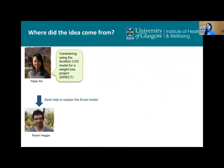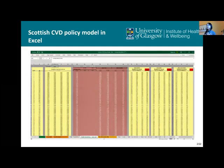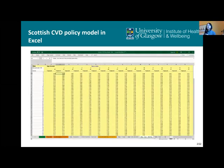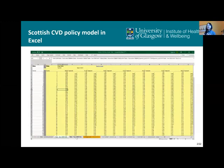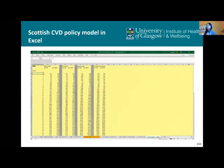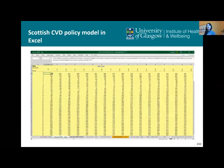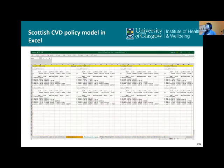I obtained the model from my colleague, and after one hour looking across the sheets, I found the model was much more complex than I thought. So I went to my colleague Robert, who had used the model for his projects before. We sat down together and after 30 minutes we both got quite confused. The Excel model contains two files for men and women, each containing over 60 sheets.